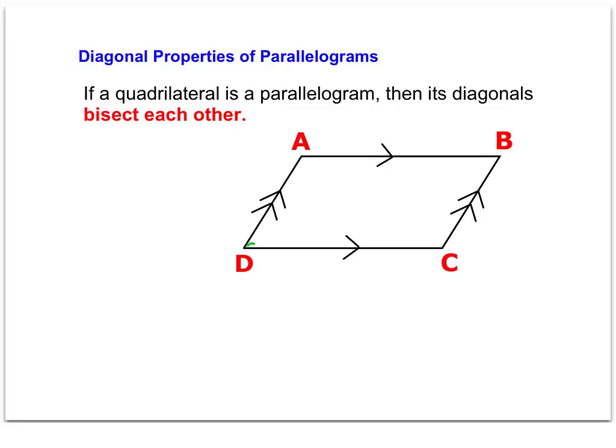Let's go ahead and draw on the diagonals, which go from opposite angles. When the theorem says bisect each other, that means that each diagonal cuts the other one into equal pieces.